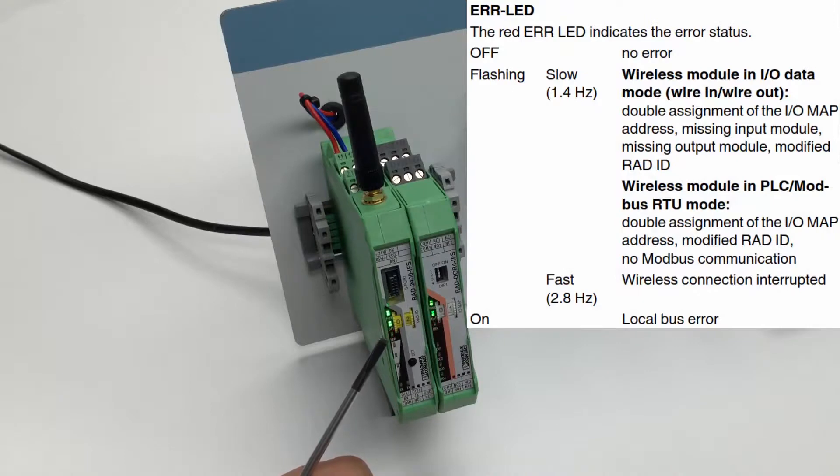the flashing red air LED on the wireless module indicates no wireless connection. The red air LED on the I.O. module indicates it is missing its corresponding I.O. pair.